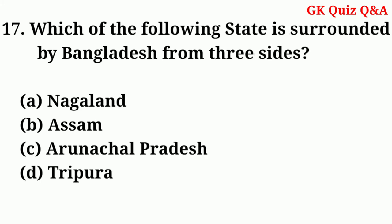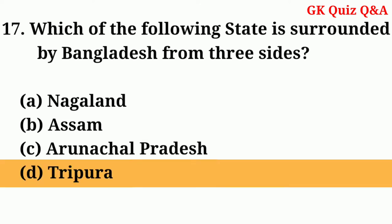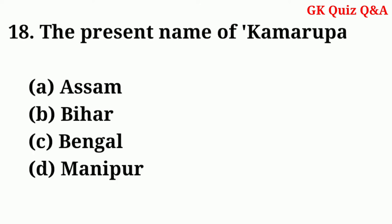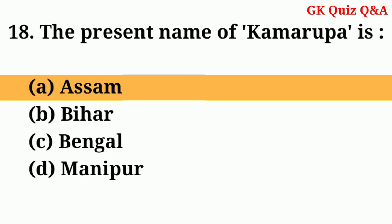Which of the following states is surrounded by Bangladesh from three sides? Answer: Tripura. The present name of Kamarupa is? Answer: Assam.